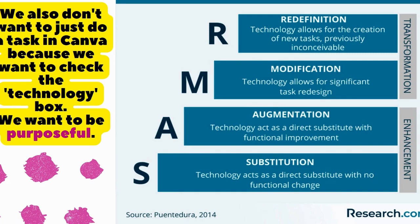This chart talks about substitution all the way to redefinition. We want to move away from using technology as a direct substitute — for example, having students make a Google Slide with vocabulary words just because the markers ran dry. Instead, we want to take it beyond that and really go into redesigning tasks, creating new tasks, things that students hadn't thought possible before. There are so many tools on Canva to allow you to cross that divide between just enhancing what you're doing and truly transforming the possibilities, allowing students to see beyond rote memorization.